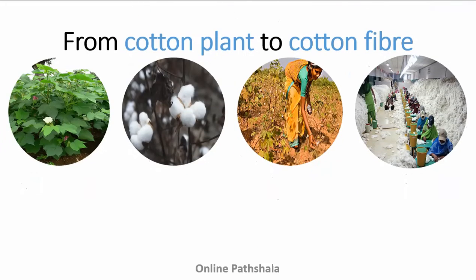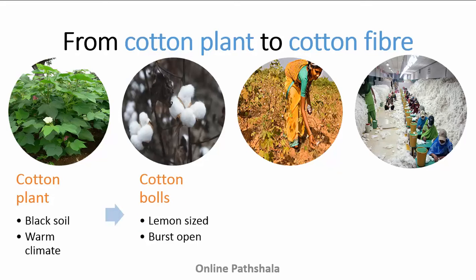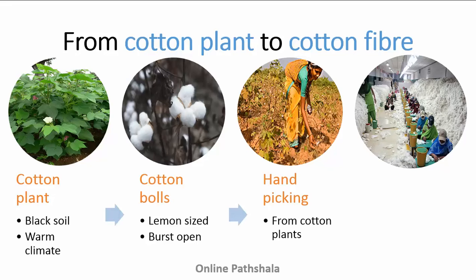So how do we obtain cotton fibre from cotton plants? It begins with cotton plants grown in fields at places having black soil and warm climate. The fruits of cotton plants are known as cotton balls and are the size of a lemon. Once the cotton balls are mature, they burst open and the seeds covered with cotton fibres can be seen. The cotton is hand picked from these cotton balls. The next step is separating the fibres from the seeds, which is known as ginning. Ginning was traditionally done by hand but these days machines are used for ginning too.